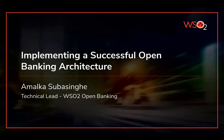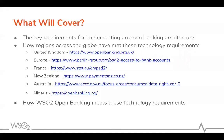I would like to cover the key requirements we need to consider when implementing open banking architecture — the API management requirements, security requirements, and functional and operational requirements. While going through all these key requirements, I will take you through examples from different regions on how they have met these requirements, and I will show how WSO2, as an open banking solution provider, helps banks meet these requirements.